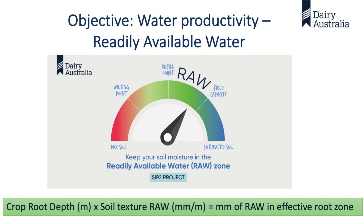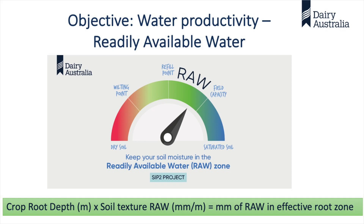If you are an irrigator, the whole reason you're an irrigator is because you control refill point. All that money you're investing — it's so you can control that. A dry land farmer has no control over refill point. An irrigation farmer has some control over field capacity as well, depending on whether rain is on. That's what you're paying the big money for — to control the water in that range.